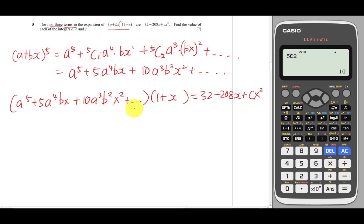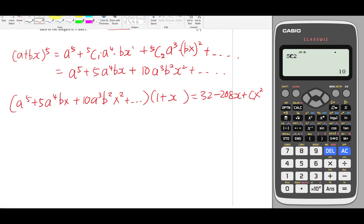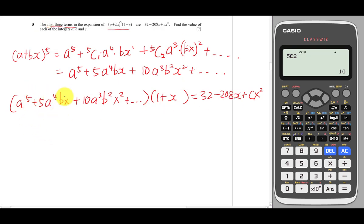What we want to do is expand and compare left and right sides. For the constant term: constant times constant is the only way to get a constant value without x. So a^5 times 1 is a^5, which equals 32.